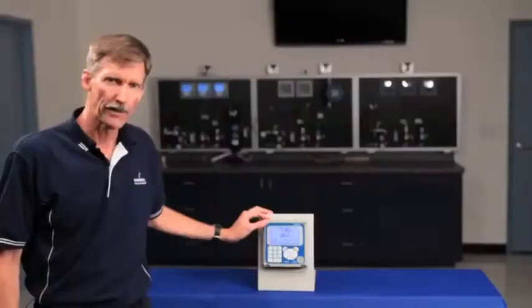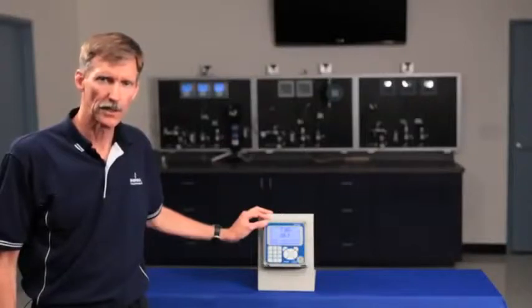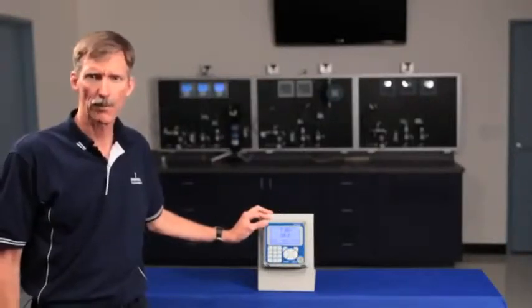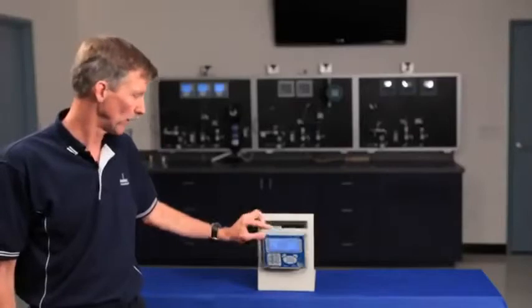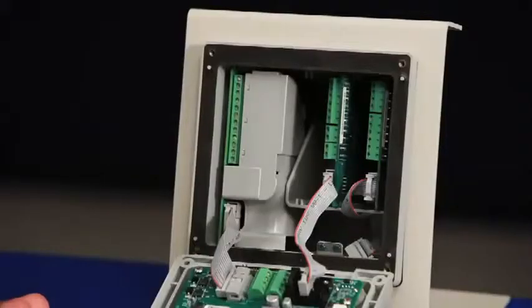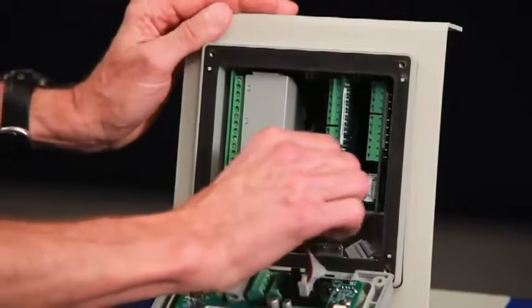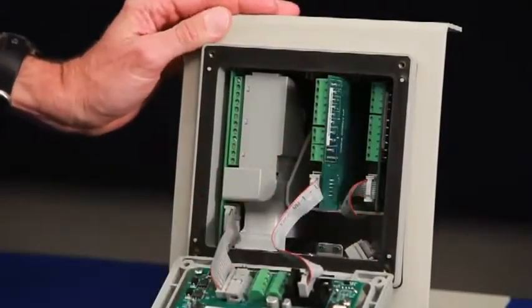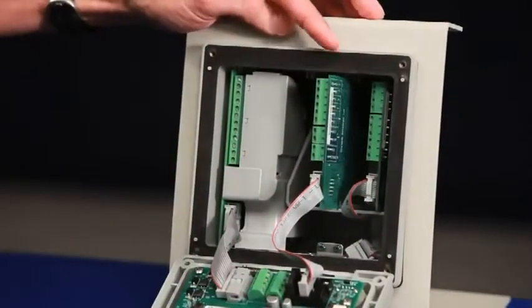For wiring, the Model 56 completely avoids complex internal architecture and hard-to-access wiring points. The modular design of the Model 56 allows technicians to slide out the signal boards and to wire the sensor leads directly to the terminal blocks of the sensor boards.